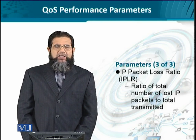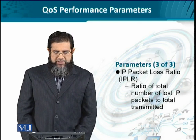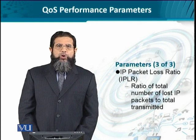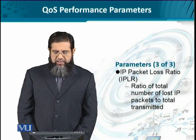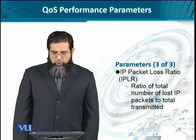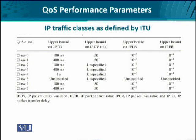Then we have the Packet Loss Ratio — a packet that is processed by a router and sent to another router but is never received, or is dropped at the input queue of a router buffer. This reflects the overall capability of a network to deliver a certain number of packets, which depends on bandwidth and buffer availability at every router. The QoS-requiring IP traffic is characterized by QoS classes based on IPTD, IPDV, and error and loss ratios.